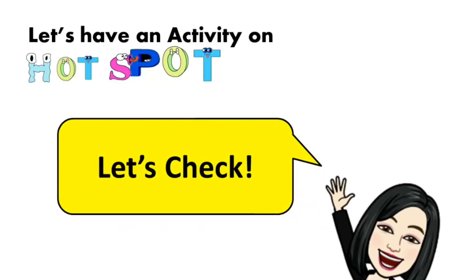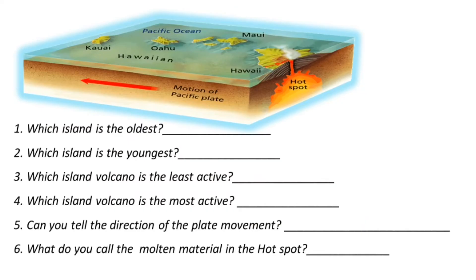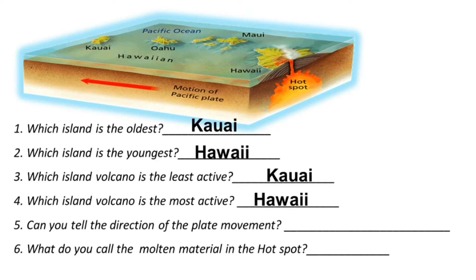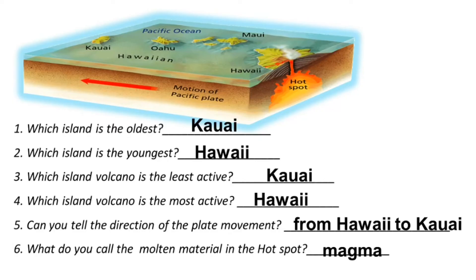Let's check your answers. The oldest island is Kauai because it's the farthest island from the hotspot. The youngest island is Hawaii because it's above the hotspot. The least active volcano is Kauai, and the most active volcano is Hawaii. The direction of plate movement is from Hawaii to Kauai, as indicated by the red arrow. The molten material in the hotspot is called magma.